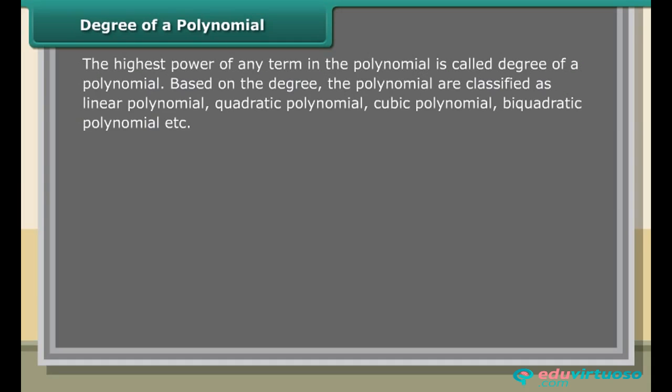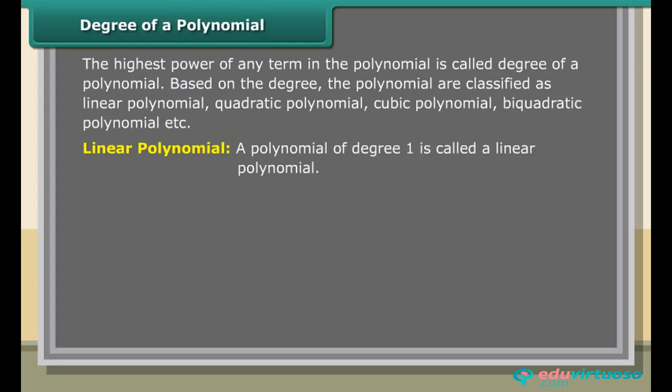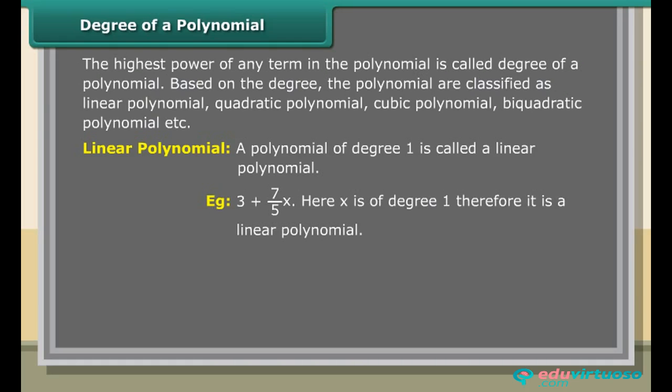Degree of a polynomial: The highest power of any term in the polynomial is called the degree of a polynomial. Based on the degree, polynomials are classified as linear, quadratic, cubic, bi-quadratic, etc. A polynomial of degree 1 is called a linear polynomial. Example: 3 + (7/5)x — here x is of degree 1, therefore it is a linear polynomial.